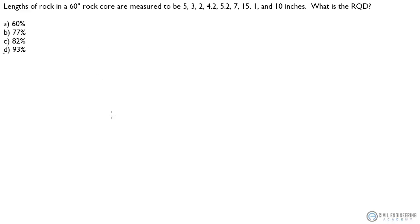This is Isaac here and this is a great geotech problem. So lengths of rock in a 60 inch rock core are measured to be 5, 3, 2, 4.2, 5.2, 7, 15, 1, and 10 inches. What is the RQD?